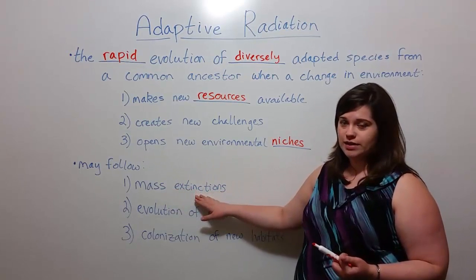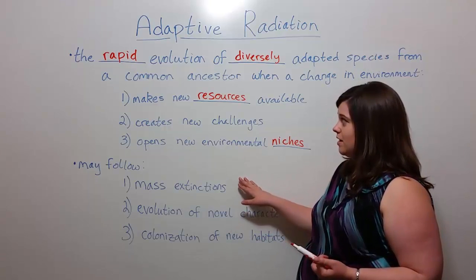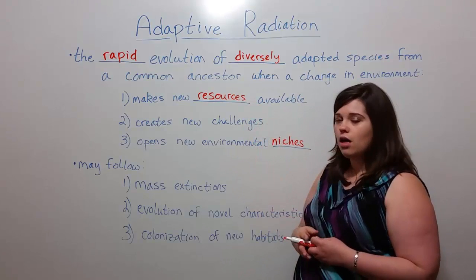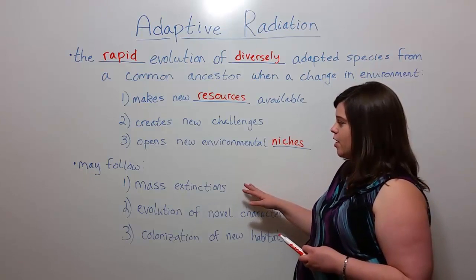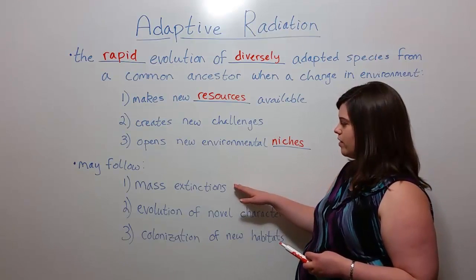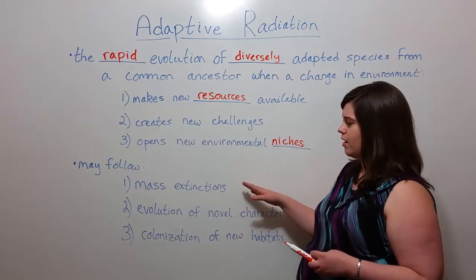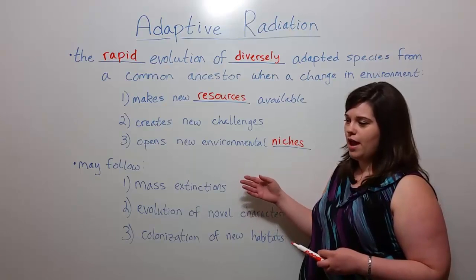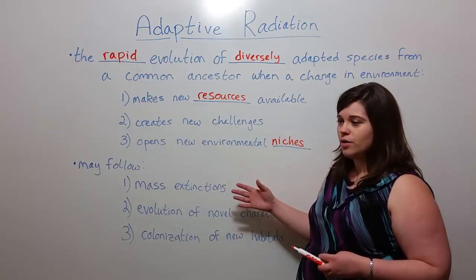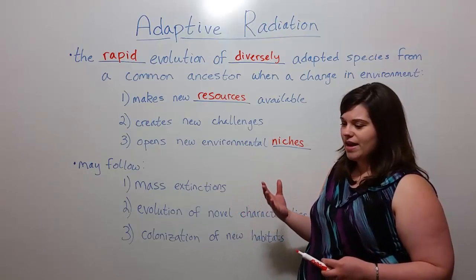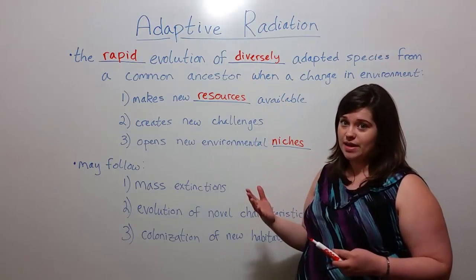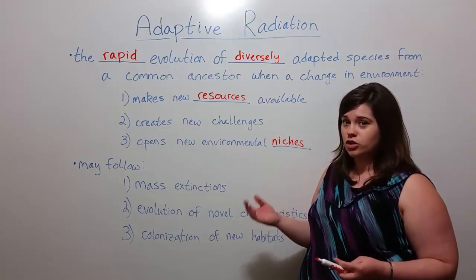One is mass extinctions. For example, the fossil record indicates that there was a significant adaptive radiation — a rapid evolution of diverse species — following the mass extinction of the dinosaurs. In particular, those species that were rapidly evolving were mammals. With the elimination of the dinosaurs and their disappearance from the earth, they were no longer inhabiting specific niches, using up resources, or acting as predators. That allowed mammals to really burst onto the scene, and that idea of bursting onto the scene is characteristic of adaptive radiation because it is so rapid and results in many species in a fairly short amount of time.